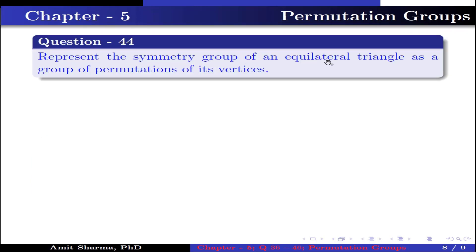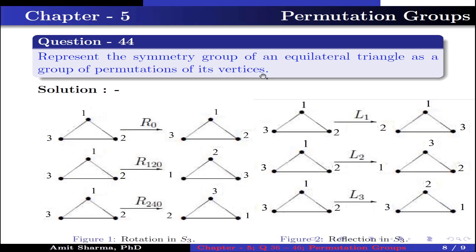Question number 44. Represent the symmetry group of an equilateral triangle as a group of permutations of its vertices. There are 3 rotations and 3 reflections. For rotation R0 (no rotation), the triangle is unchanged. For rotation R120, rotate by 120 degrees — vertex 1 goes to vertex 2's position, vertex 2 goes to vertex 3's position, and vertex 3 goes to vertex 1's position. For R240, rotate by 240 degrees — the vertices shift accordingly. For each reflection, fix one vertex and flip the other two: fixing vertex 1 gives the first reflection, fixing vertex 2 gives the second reflection, and fixing vertex 3 gives the third reflection.